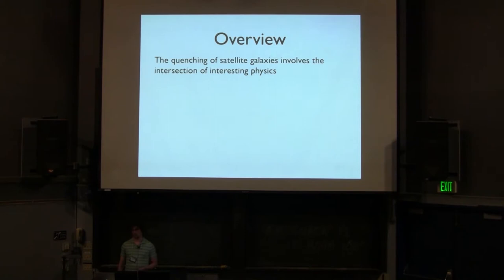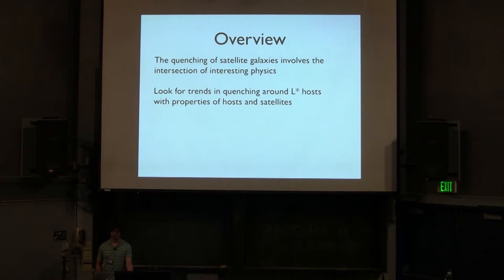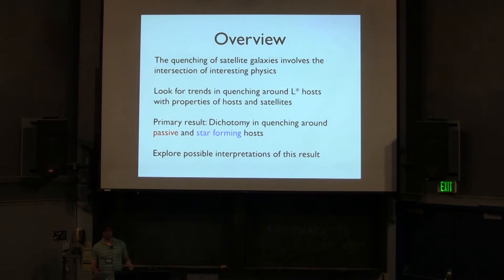So just to give a brief overview of the talk, some of the talks earlier have done a good job of motivating why studying the quenching of galaxies is interesting. It involves a lot of interesting physics and they're all intersecting. So what we want to do is to simplify the question. We want to look at systems of isolated L-star galaxies and look for trends in quenching with properties of the hosts and the satellites and the host satellite systems. I'm going to spend some time talking about our primary result, which is the dichotomy that passive hosts do quench their satellite galaxies and star forming hosts do not. And then at the end I'm going to get into some possible physical interpretations of these results.